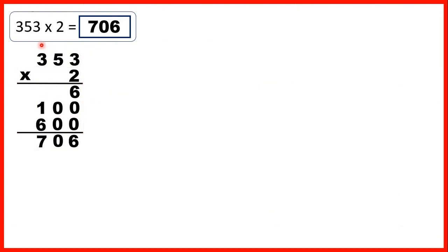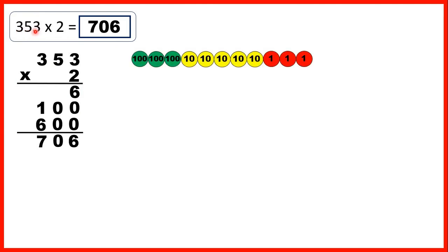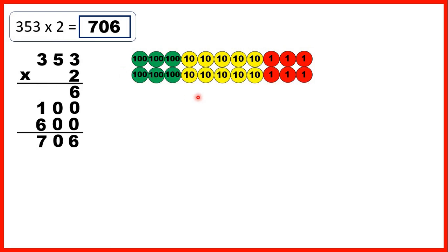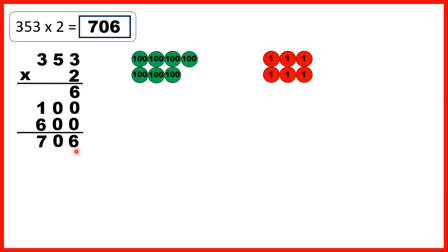So let's take another look at this first question. We had three hundred and fifty-three, so in three hundred and fifty-three we have three hundreds, five tens, and three ones. We were multiplying by two, so we can show the place value counters that we have two times. Now we have ten tens, but we can regroup ten tens into one hundred, and that gives us our answer, seven hundred and six, because now we have seven hundreds, no tens, and six ones.